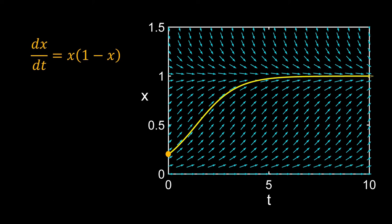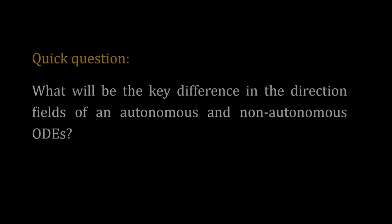We will get the same curve by solving the ODE for that particular initial condition. Now, a quick question: what will be the key difference in the direction fields of autonomous and non-autonomous ODEs?